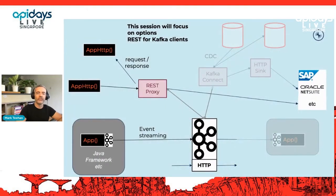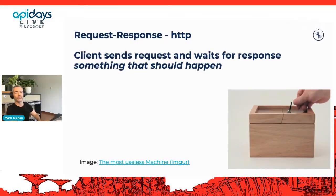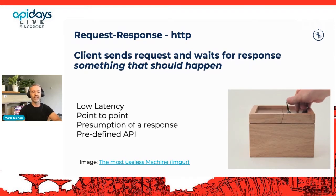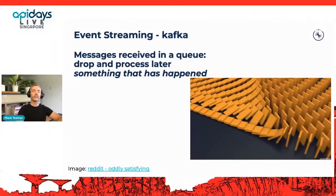For today's talk, we'll focus on: request-response as a communication paradigm for Kafka, how it compares with event streaming, a look at the REST proxy and HTTP calls versus event streaming, and the REST endpoints built into the Kafka brokers themselves. Request-response is an HTTP call where your client sends a request and waits for a response — it's low latency, typically point-to-point, with a presumption of a response using a predefined API.